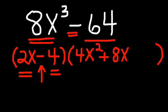Finally to get my third and last term, I take the second term of the first factor and I square it. Negative 4 times negative 4 is positive 16. And those are my factors of 8x cubed minus 64.